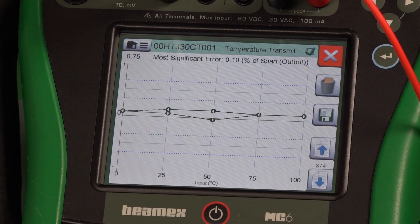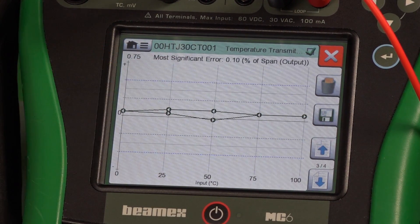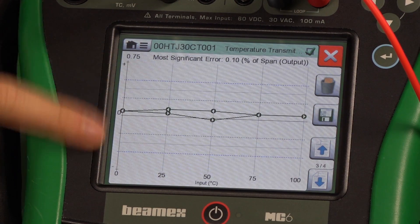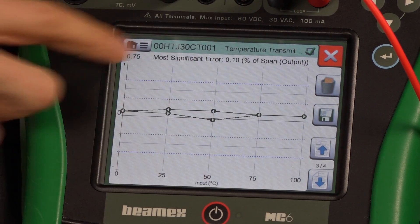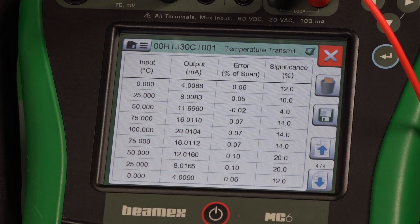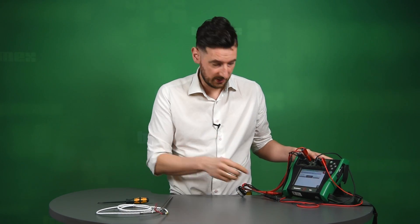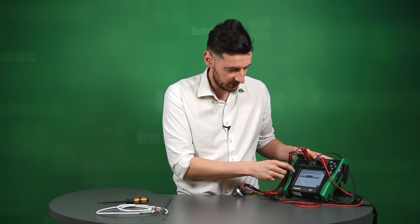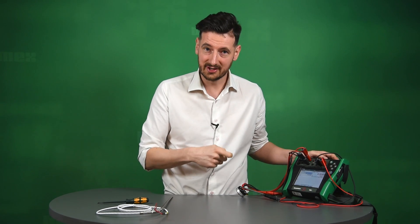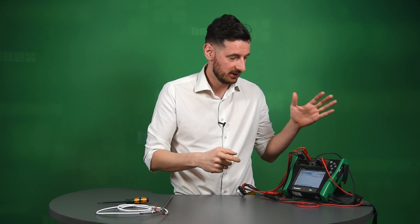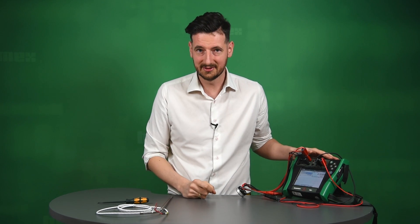We can save this calibration. We can actually save this calibration as left. We can also combine this with the previous results if that was the case and we can just save it. And there you have it. That's how you calibrate RTD transmitter using a calibrator documented calibrator.